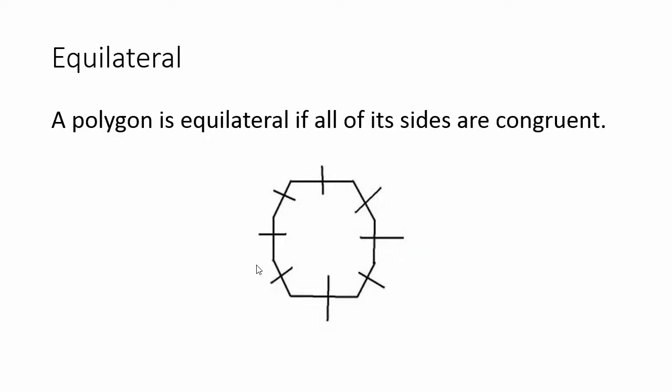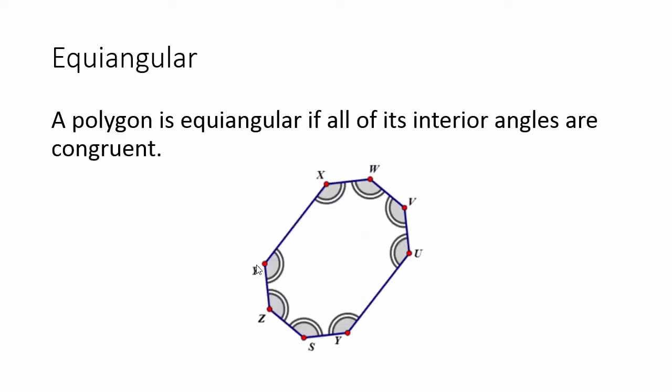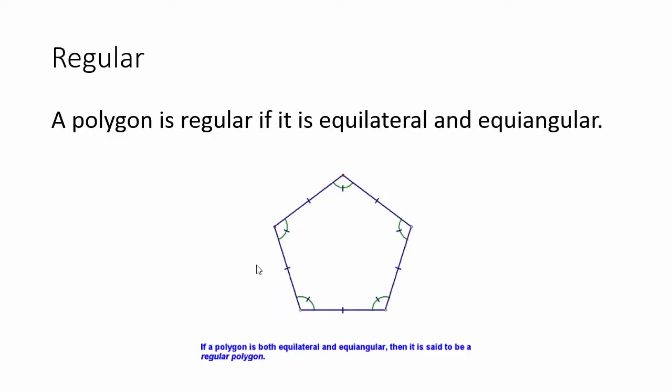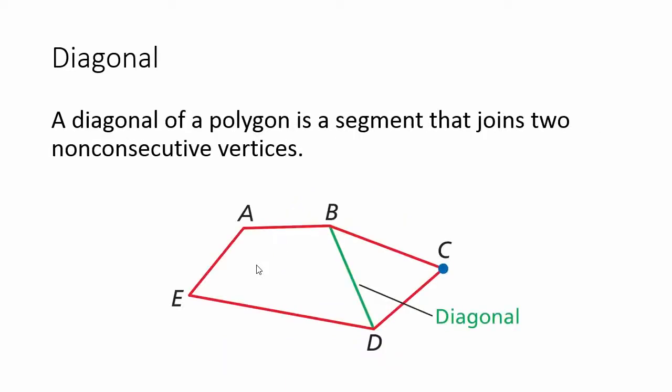Equilateral: a polygon is equilateral if all of its sides are congruent. Equiangular: a polygon is equiangular if all of its interior angles are congruent. Regular: a polygon is regular if it is both equilateral and equiangular, meaning all of its sides are congruent and all of its angles are congruent. Diagonal: a diagonal of a polygon is a segment that joins two non-consecutive vertices.